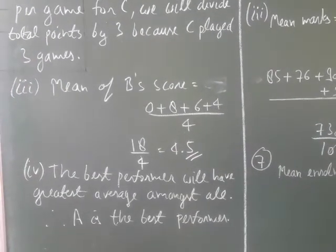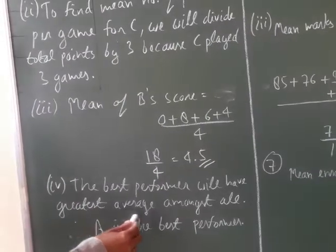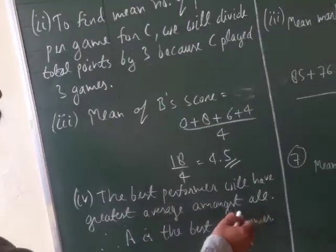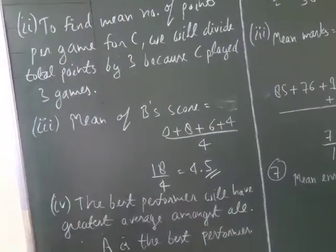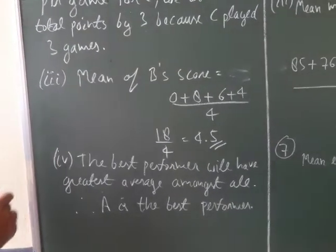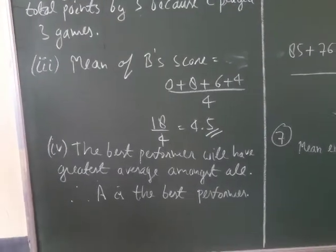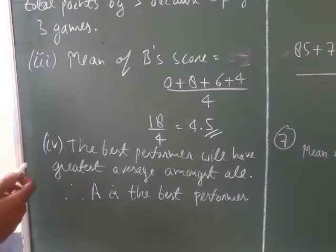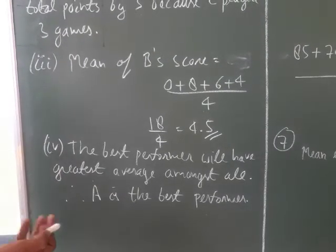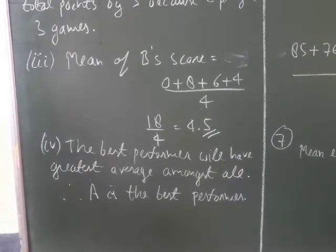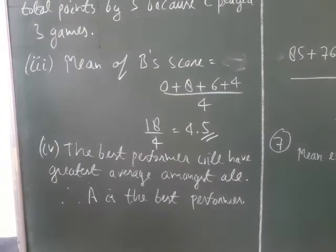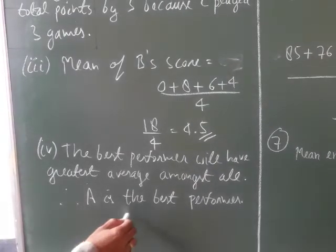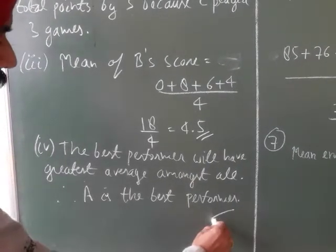Fourth part: who is the best performer? The best performer has the greatest average. Player A's average is 12.5, player B's average is 4.5, and player C played only 3 games so her average is lower. The highest average score is A's, therefore A is the best performer.